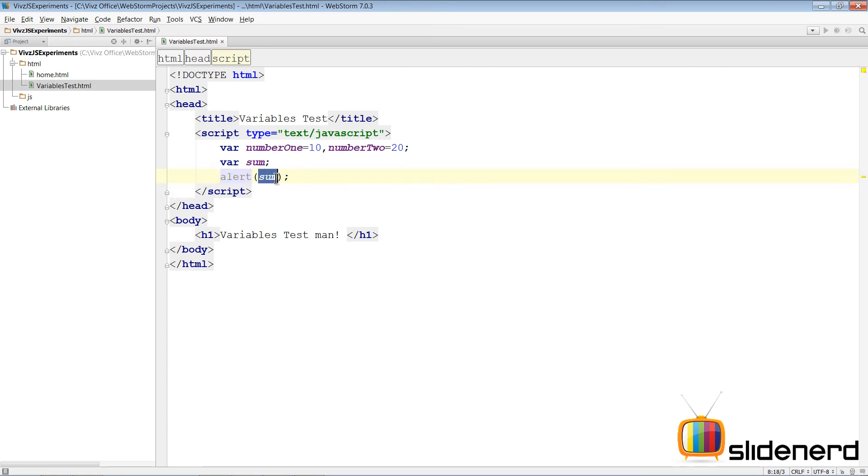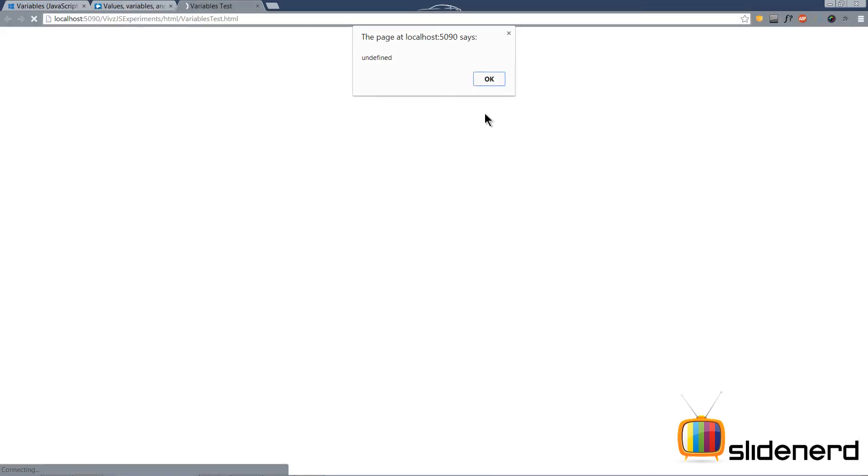You can directly say alert and put sum inside the parenthesis. This alert is going to display the value contained inside the variable sum. But notice the irony - I said value contained inside the variable sum, but sum has no value. So what is it going to display? Let's take a look. Go to Google Chrome, and as you notice it says undefined. In JavaScript, when you don't give a value, the value that pops up is undefined.